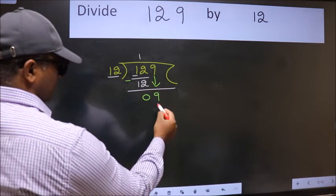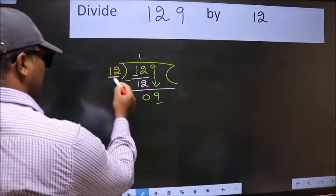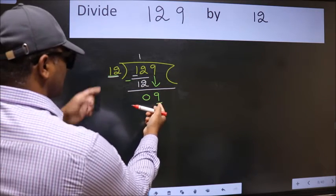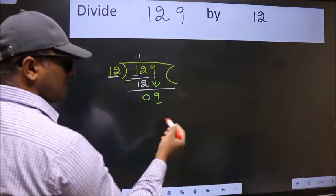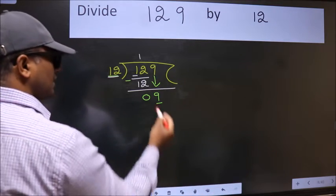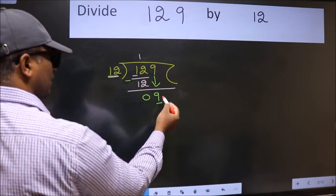After this step, the mistake happens. And the mistake is this: here we have 9 and here 12. 9 is smaller than 12, so what many do is they directly put dot, take 0.